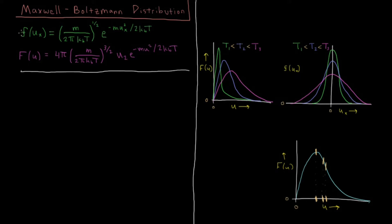If you take those three components and multiply them together — f(ux) times f(uy) times f(uz) — you'll get the total velocity distribution. Notice that the total velocity is going to go from zero to infinity, not from minus infinity to plus infinity.